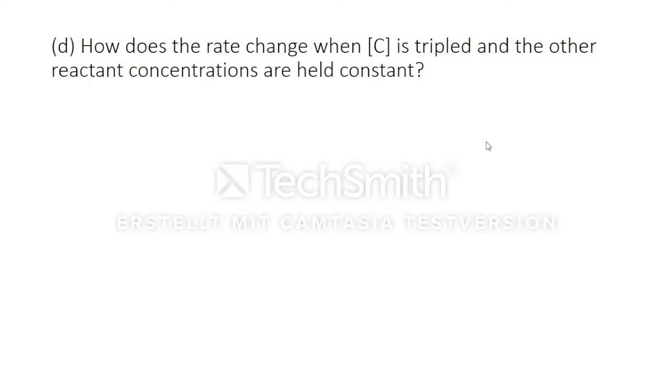Now, how does the rate change when C is tripled and the other reactant concentrations are held constant? Just like before, the increased concentration is plugged into our rate law. C is the first order, which means three to the power of one equals three.